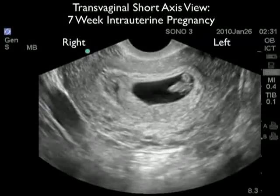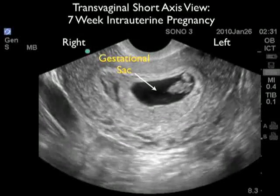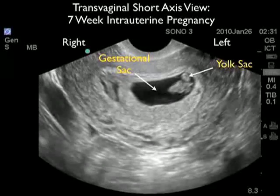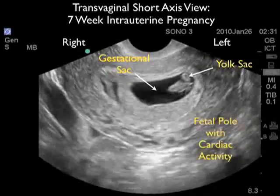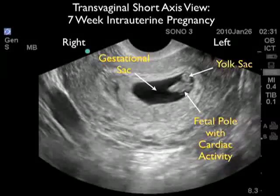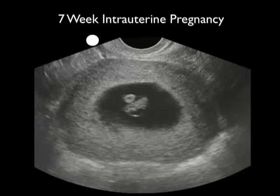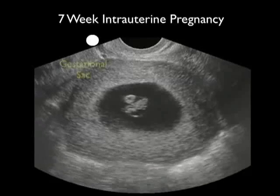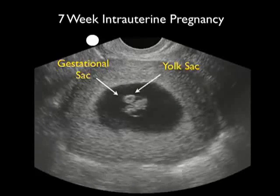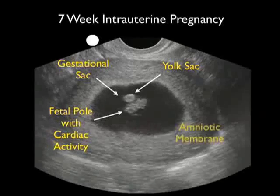Here's a transvaginal short axis view of a 7-week intrauterine pregnancy. The gestational sac is located in the center of the uterus with a good amount of myometrial mantle surrounding it, signifying a fundal location. We see the positive cheerio sign or yolk sac to the upper right aspect of the gestational sac, and just below it the fetal pole stretched out. Notice the positive cardiac activity as we scan back and forth through the fetal pole.